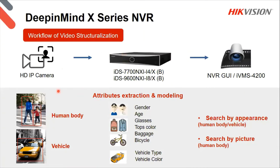To recap: for human body and vehicle attributes, it extracts gender, age, whether wearing glasses, top colors (jacket or shirt), whether carrying a backpack or suitcase, whether on a bicycle. For vehicles, it classifies type — bus, car, van, truck — and color. Because it does classification, you can also do a search afterwards. You can tell the NVR: I'm looking for a middle-aged male wearing glasses with a red shirt — and it'll filter to those criteria. Much easier and quicker to find results. Already compatible with IVMS 4200.